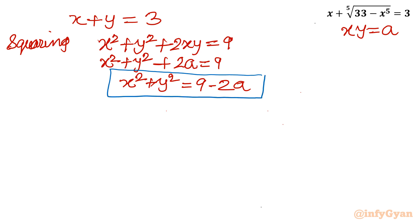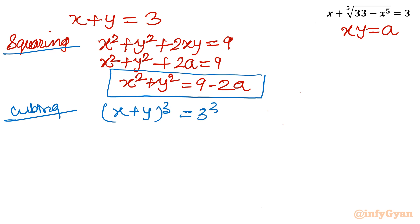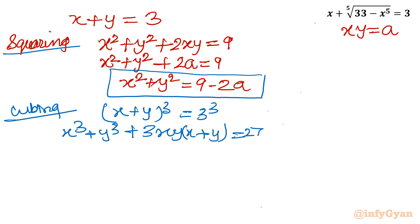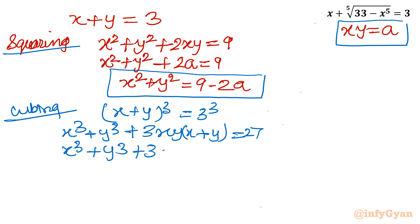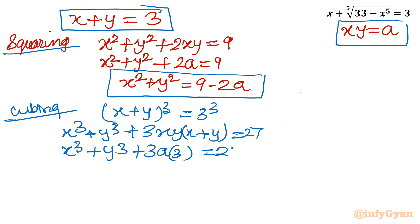Now I will consider cubing the same equation. Cubing both sides: (x plus y)^3 equals 3^3 equals 27. Using the (a+b)^3 formula: x^3 plus y^3 plus 3xy(x plus y) equals 27. Since xy is a and x plus y is 3, we get x^3 plus y^3 plus 3a times 3 equals 27, so x^3 plus y^3 equals 27 minus 9a.